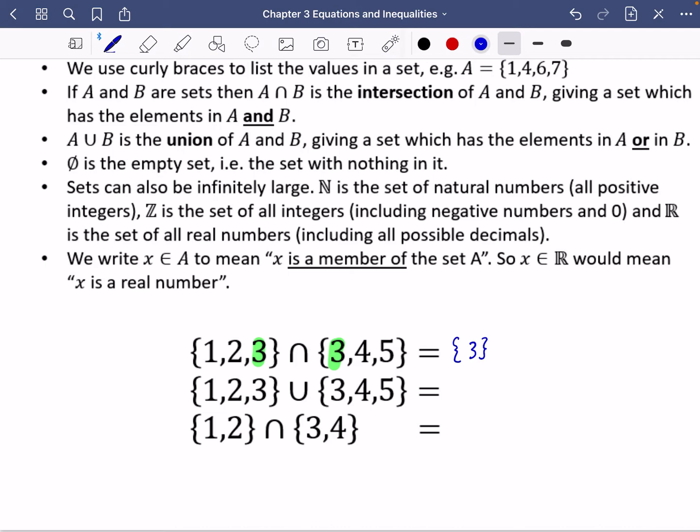Now the second one that we've got here has a union, which means that you can definitely have all of these and you can have all of these, but I wouldn't repeat writing three twice because I only want to include it once. So it's the union of these. So I would have one, two, three, four, and five for this.